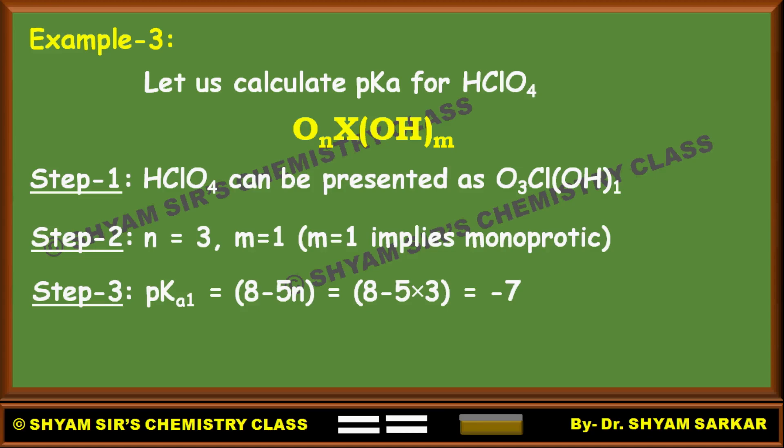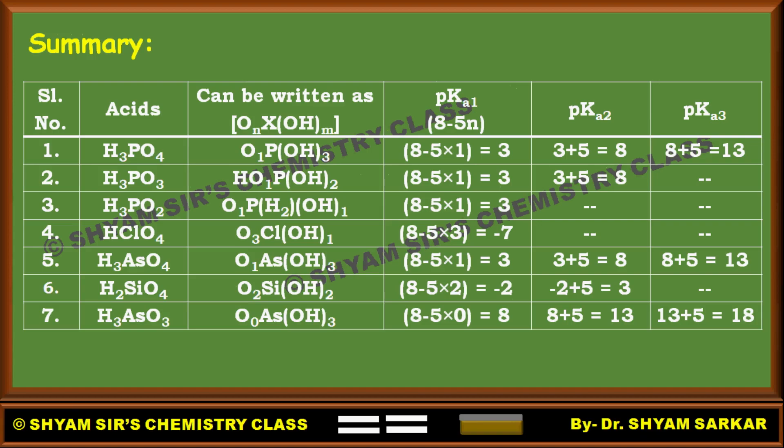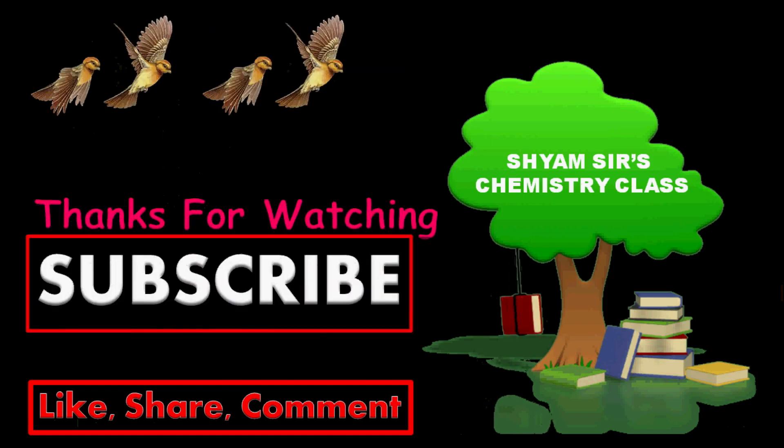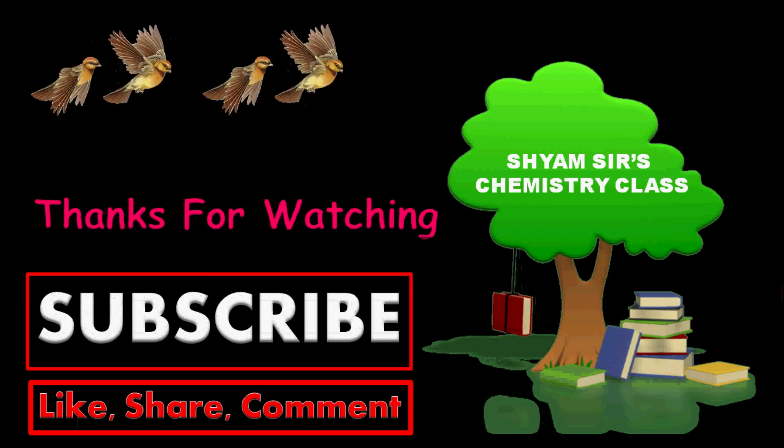Pauling's rule is very important and very easy to determine pKa values. I have summarized seven examples here with step-by-step calculations of pKa1, pKa2, and pKa3 — I think this will be very helpful for you. You can save this for future reference. If you like this video, please like and share it among your friends. Thank you so much for watching. If you have not subscribed to my channel yet, please subscribe — more interesting videos, topics, and question-answer discussions are coming very shortly.